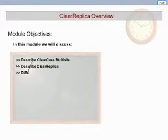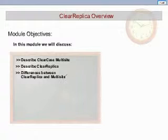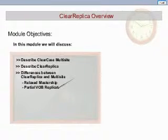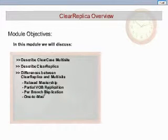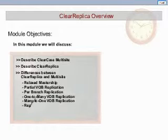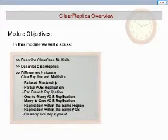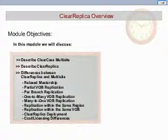You'll be able to describe the differences between the two products, and discuss features only available in ClearReplica, like relaxed mastership, partial VOB replication, per branch replication, both one-to-many and many-to-one VOB replication, replication of data between VOBs in the same region, or even within the same VOB. You'll learn about ClearReplica's ability to deploy to even non-ClearCase hosts. Finally, we'll discuss cost and licensing differences between ClearCase Multisite and ClearReplica.